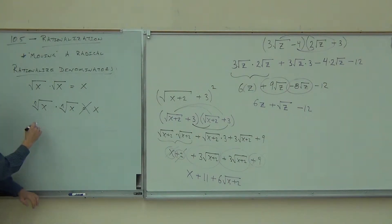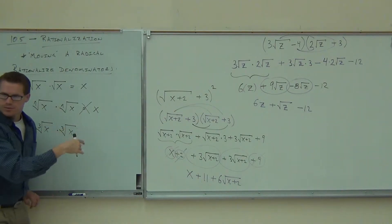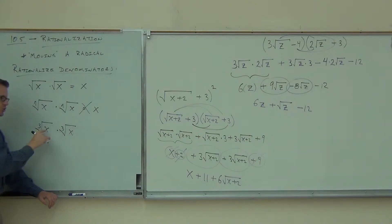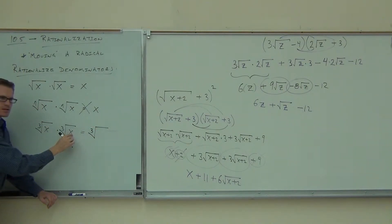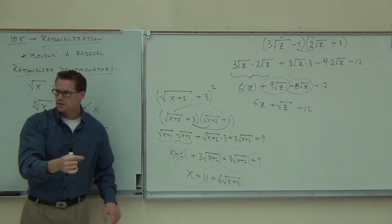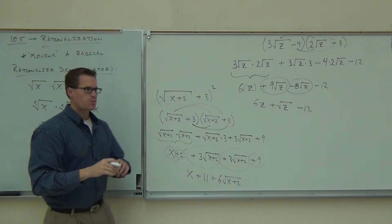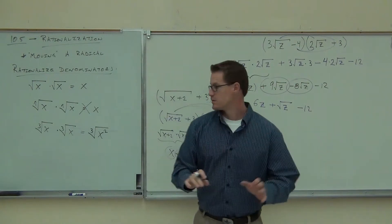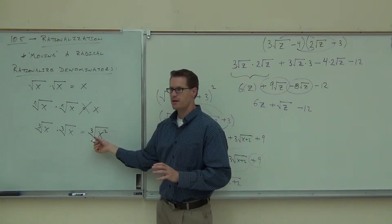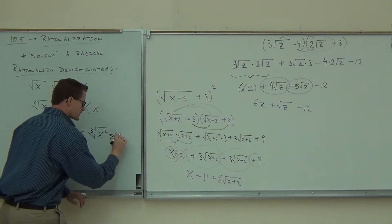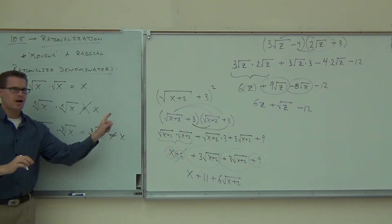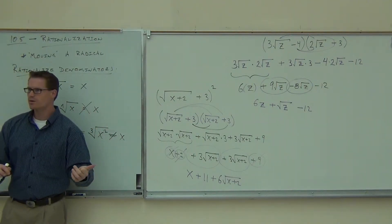Here's why: if you have a cube root of x times a cube root of x — and this will work for any other type of root — you're going to have a cube root times a cube root, so you multiply those together and get the cube root of x squared. But does x squared match up with the cube root? The power is actually less than the root, so you can't simplify it. That's not equal to x, meaning this times this doesn't give you the radicand anymore.